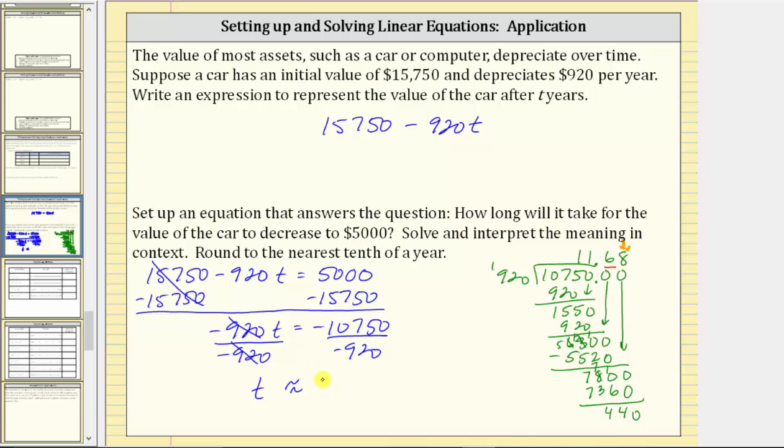So t is approximately 11.7, which means after approximately 11.7 years, the car's value has decreased to $5,000. Let's write this as a sentence.